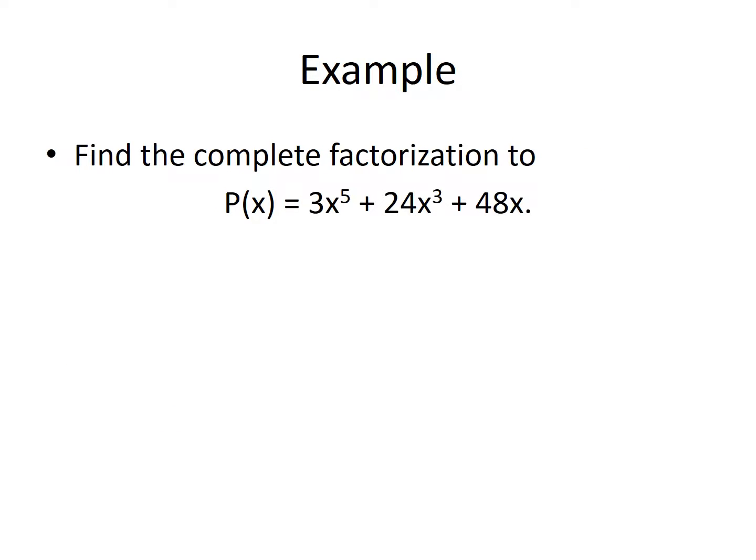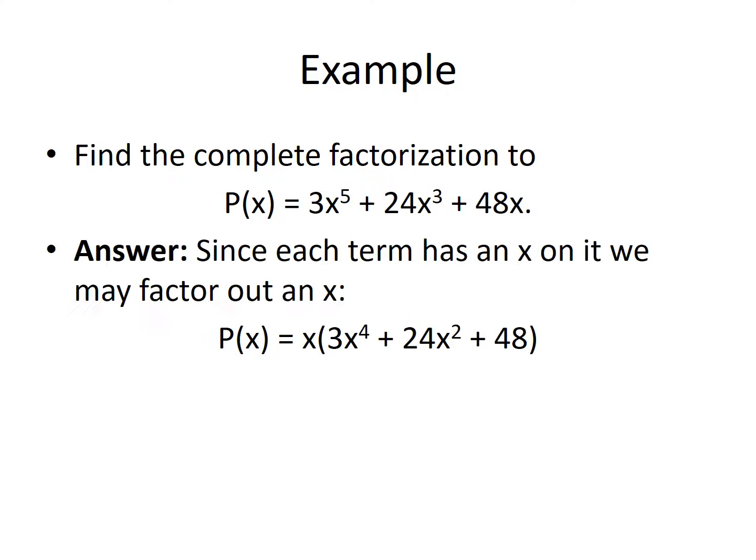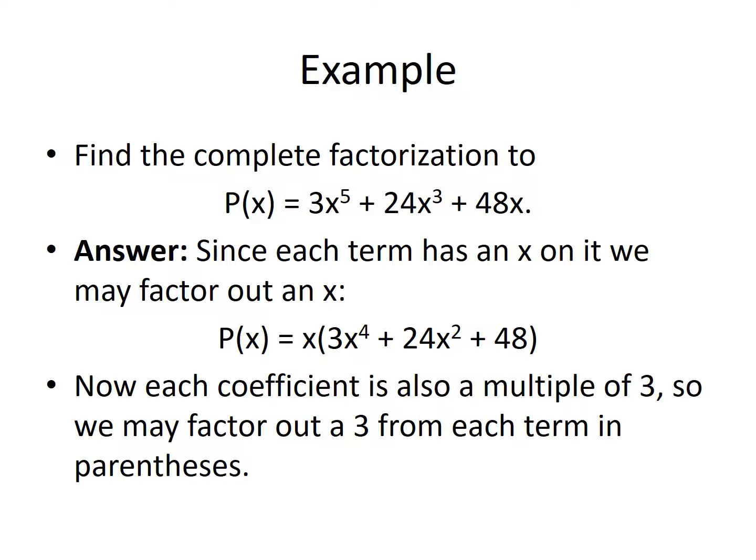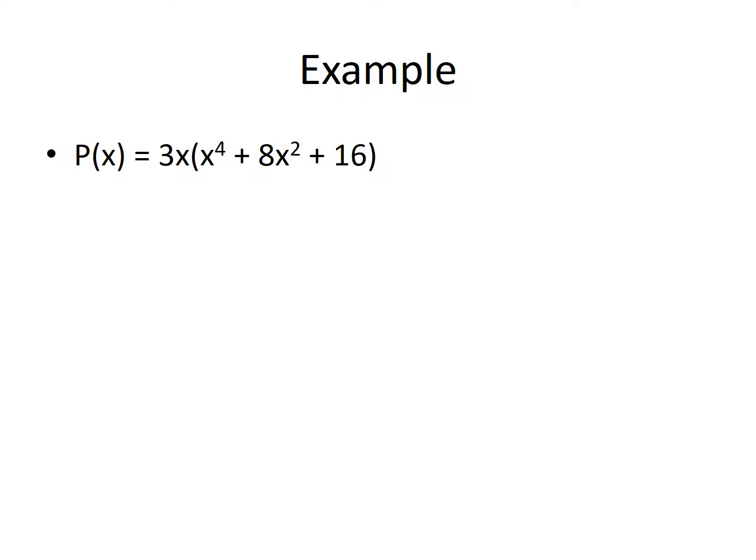Now that we have the means of finding solutions, we also have the means of factoring polynomials. Here's an example: find the complete factorization of p of x equal to 3x to the fifth plus 24x cubed plus 48x. Since each term has an x, we may factor out an x, giving x times the quantity 3x to the fourth plus 24x squared plus 48. Each coefficient is also a multiple of 3, so we factor a 3 out, giving 3x times the quantity x to the fourth plus 8x squared plus 16.